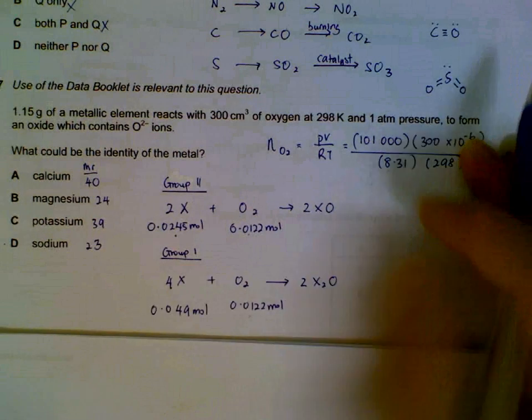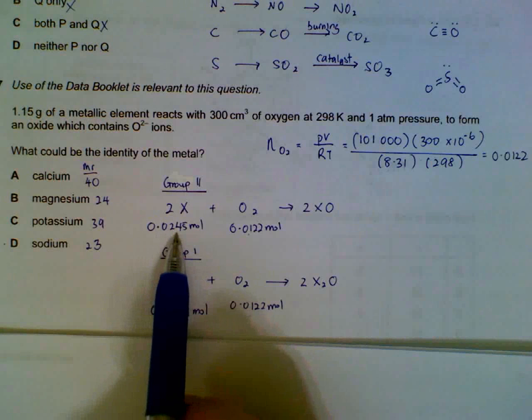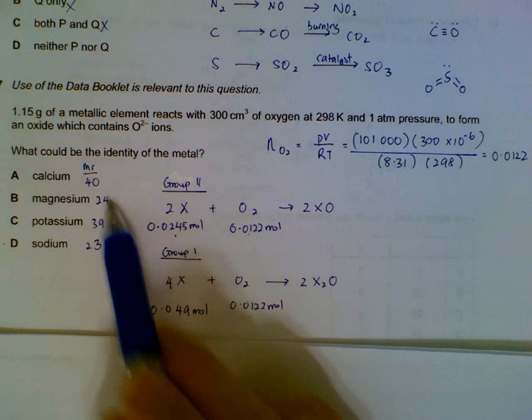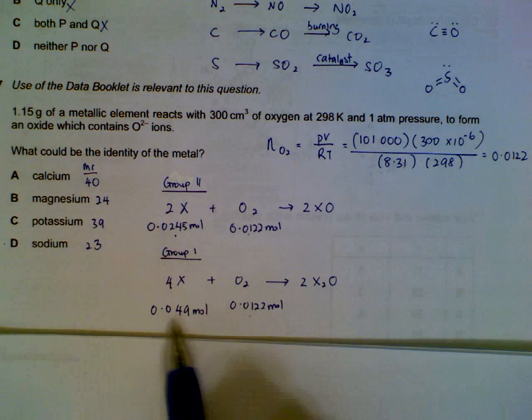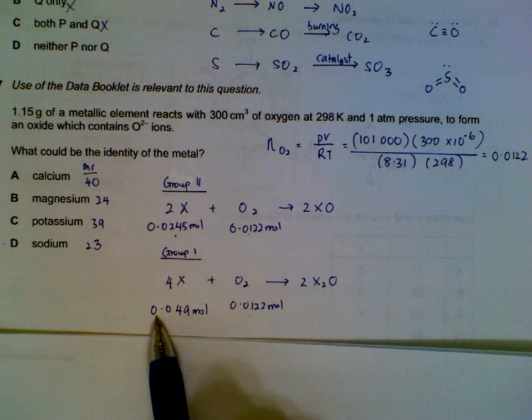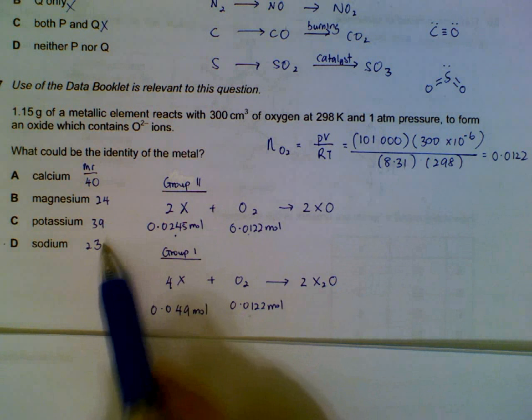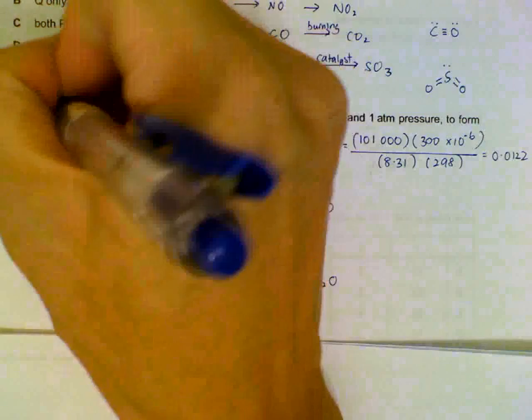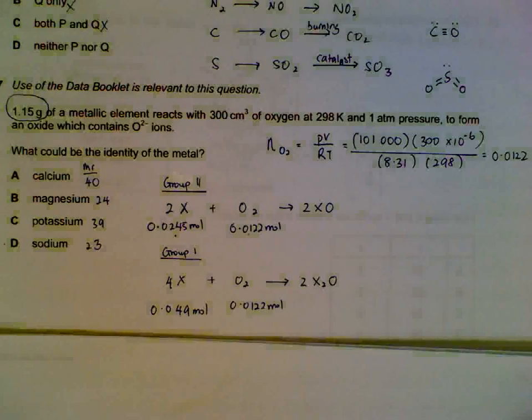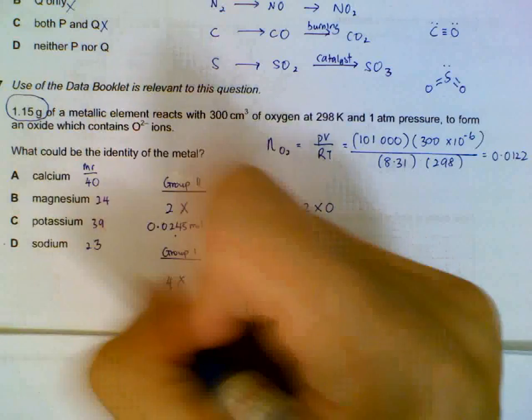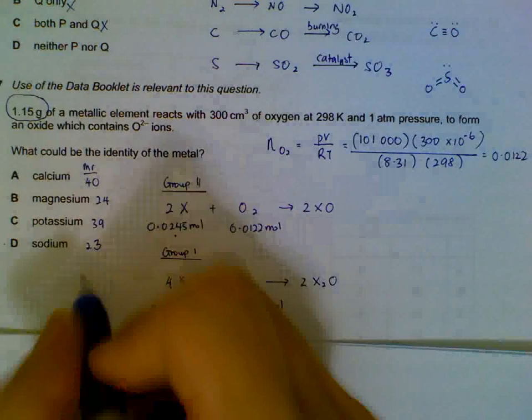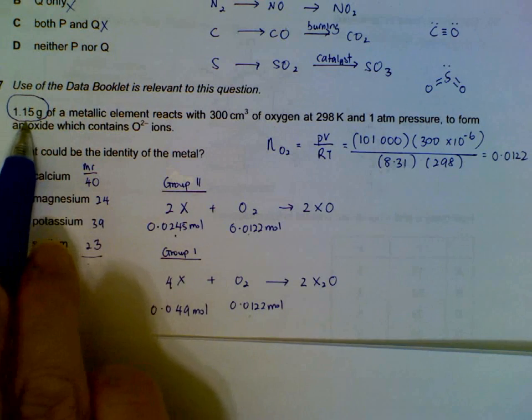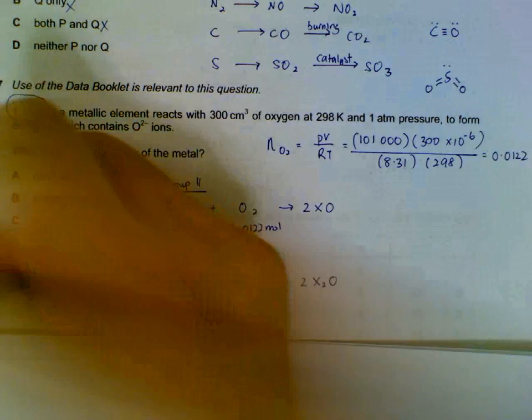How do we know which metal it will be? A bit of trial and error from here. We will take 0.0245 multiplied by MR of Group 2 metals. We will take 0.049 multiplied by MR of Group 1 metals. And then we will see which combination gives us the unused information here. When we take 0.049 multiplied by MR of sodium, we get close to 1.15. So the unknown is actually sodium.